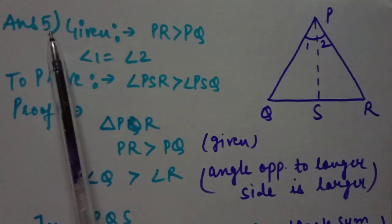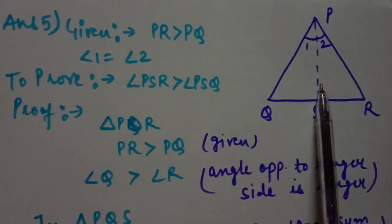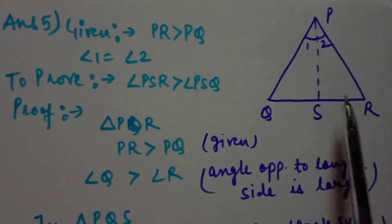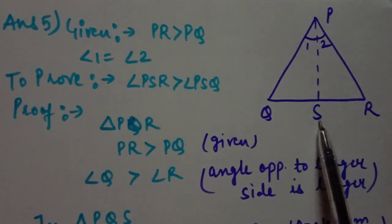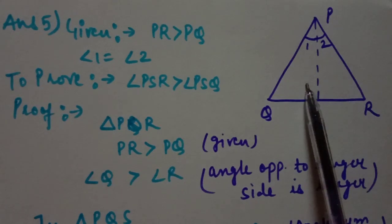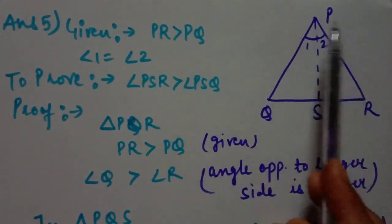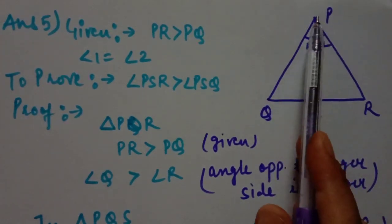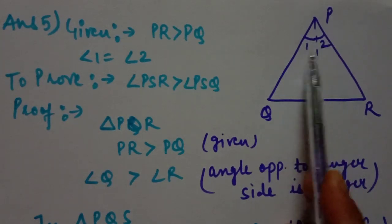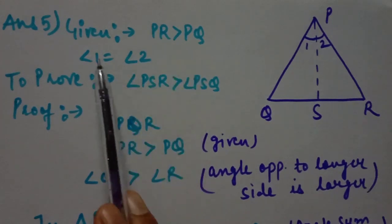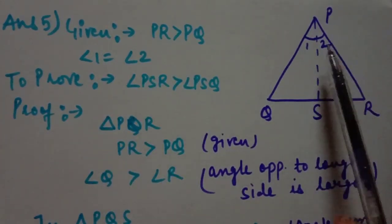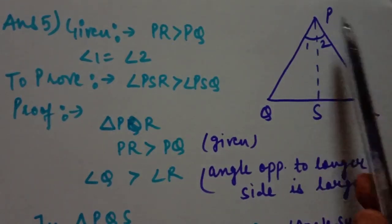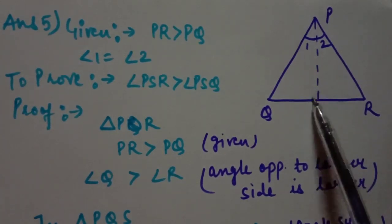Question 5 of Exercise 7.4: in the given figure PR is greater than PQ and PS bisects angle P. Prove that angle PSR is greater than angle PSQ. In this diagram, PR is greater than PQ, and PS bisects angle P, meaning angle 1 equals angle 2. We have to prove that angle PSR is greater than angle PSQ.